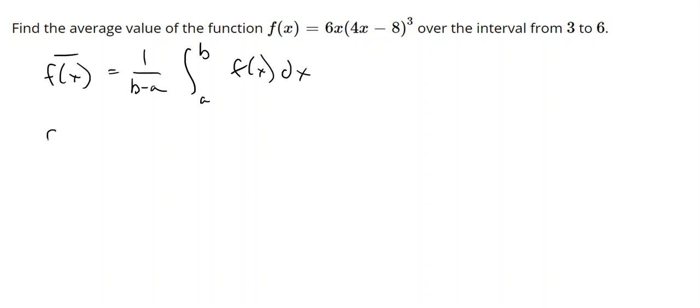So setting up this particular integral with what we know, we know that a and b are 3 and 6, so that would be 1 over 3 times the integral from 3 to 6. And then our function is 6x times 4x minus 8 cubed dx.